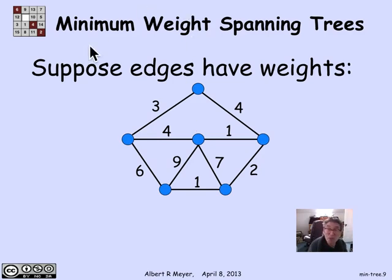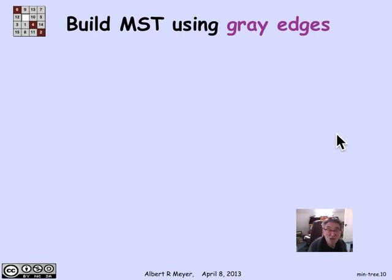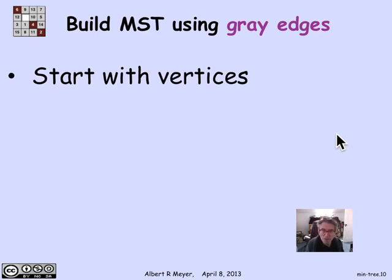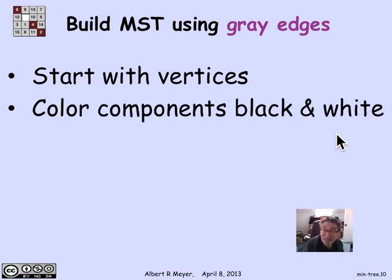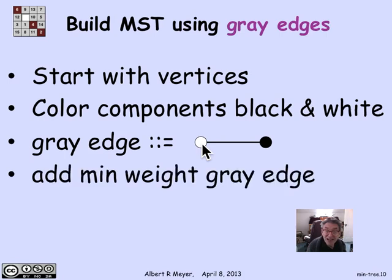There's a fairly simple way to construct a minimum weight spanning tree. The idea is to build it using gray edges. Starting with the vertices, we build a tree incrementally. At any point we have a set of edges with no cycles — a forest, not yet connected. At each stage, we look at the connected components of the current graph and color them black or white. A gray edge is defined as an edge where one endpoint is black and the other is white.